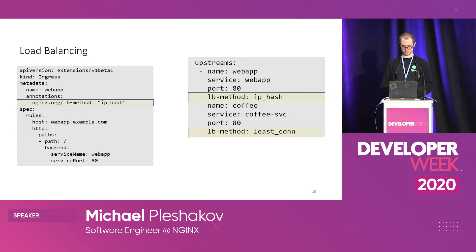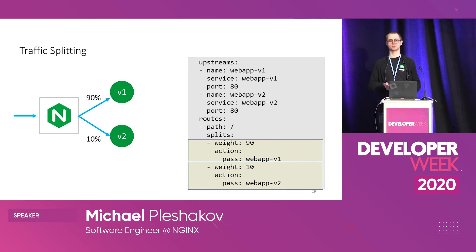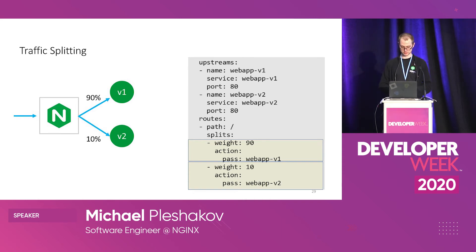Another limitation addressed is traffic splitting. Imagine you have two versions of your service and want NGINX to route 90% of requests to version one and 10% to version two — useful for canary releases. The VirtualServer resource routing rules allow you to split traffic among multiple versions of the same application using the splits field. You configure weights: 90% of requests routed to version one and the remaining 10% to version two.